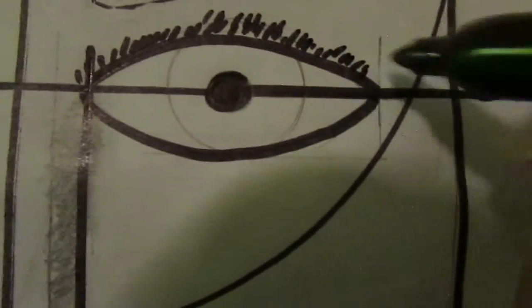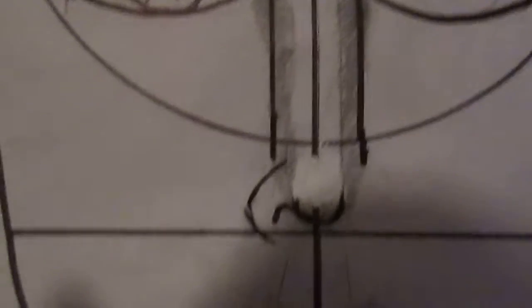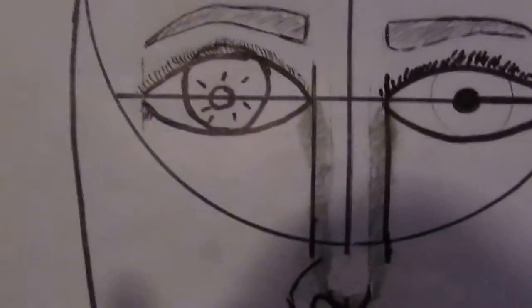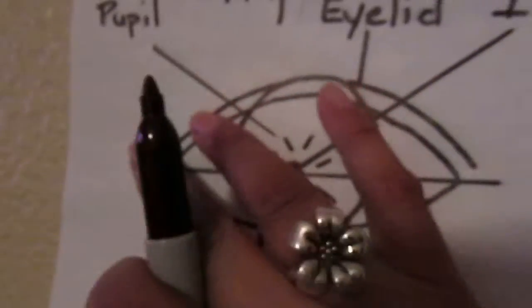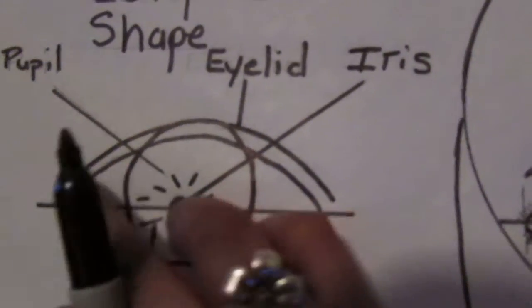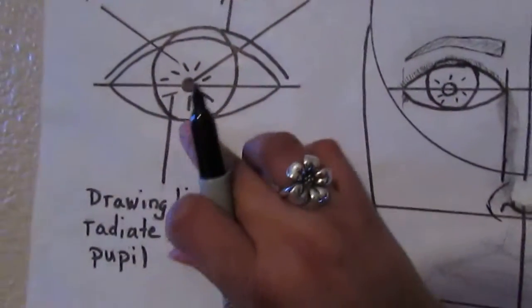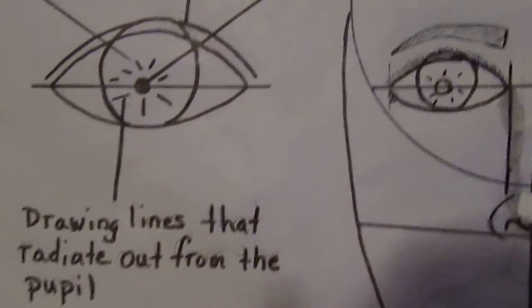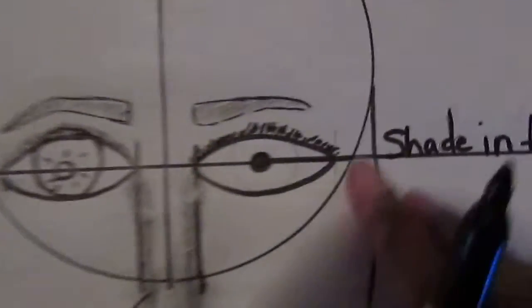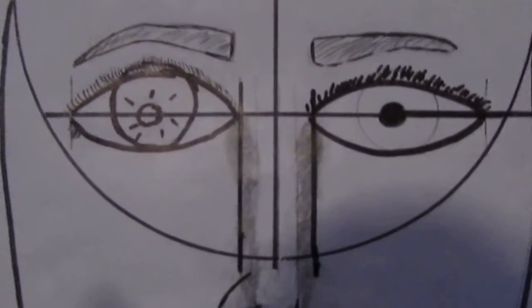And then when you go down, you're going to go downward. So you should have your ellipse-shaped eyes—I'm just going over one more time—your pupil, your eyelid, your iris, your radiant lines, and your eyelashes.